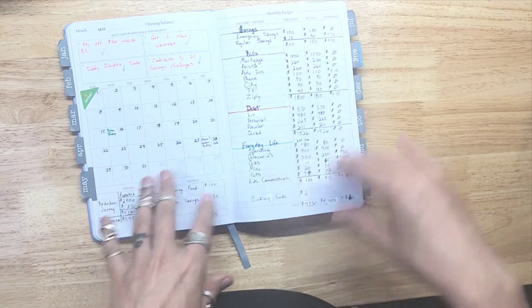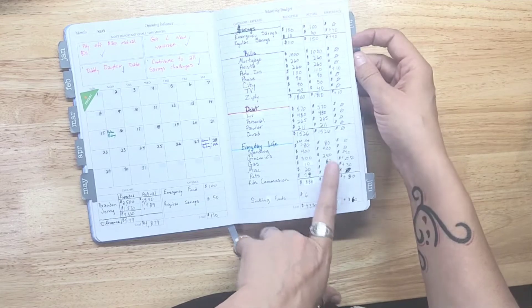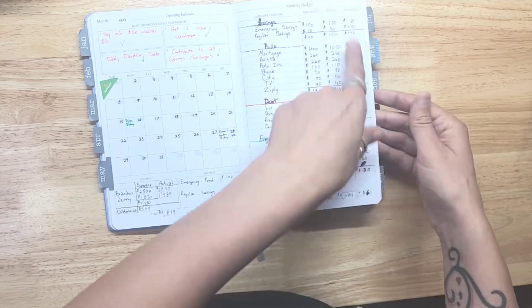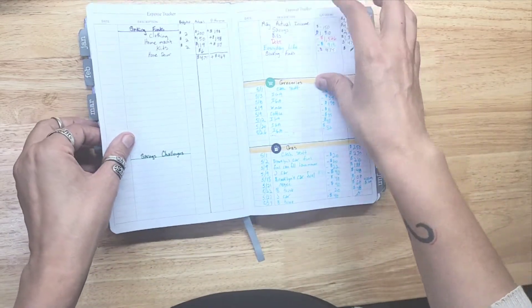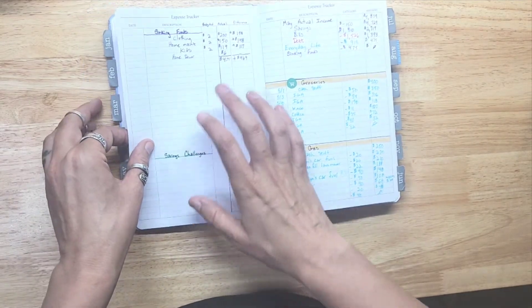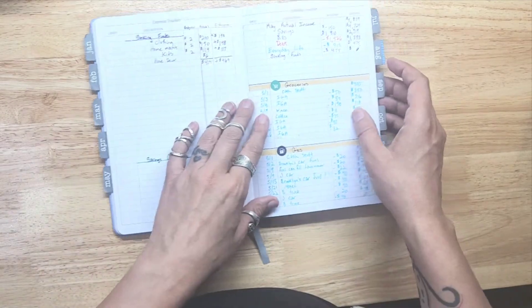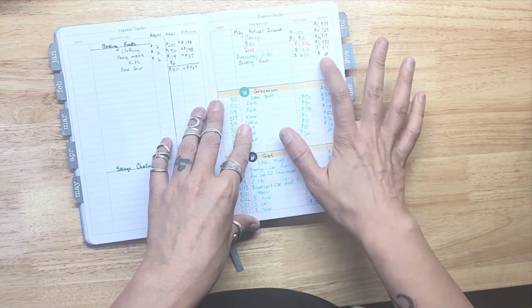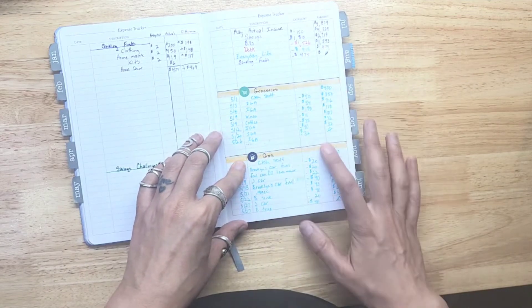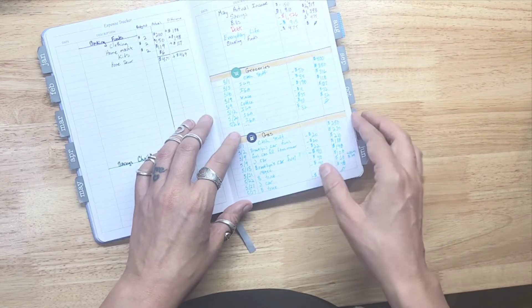So we basically had the breakdown, what we budgeted for, what we ended up spending after we found out what our actual income was, and the difference. And we didn't do anything for our savings challenges out of our main monthly income and these are the sinking funds that we contributed out of our regular paycheck. Then we had the breakdown here, zero based budget, assign every dollar, and then how our groceries were spent and our gas.